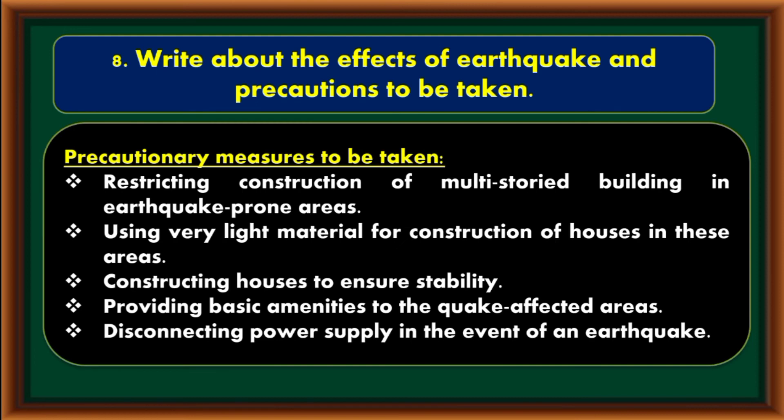Precautionary measures to be taken: restricting construction of multi-storied buildings in earthquake-prone areas, using very light material for construction of houses in these areas, constructing houses to ensure stability, providing basic amenities to quake-affected areas, and disconnecting power supply in the event of an earthquake.